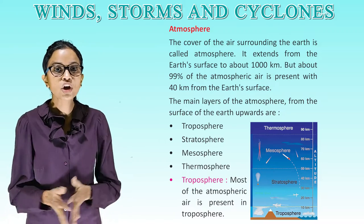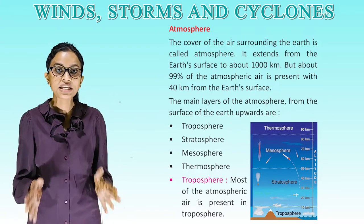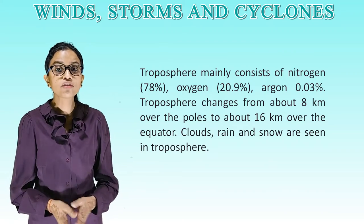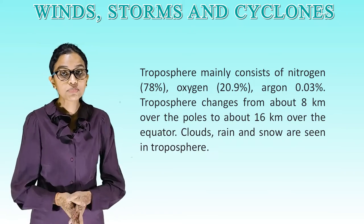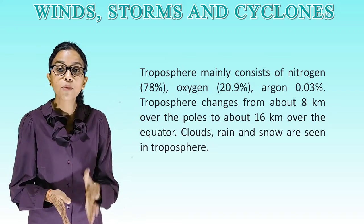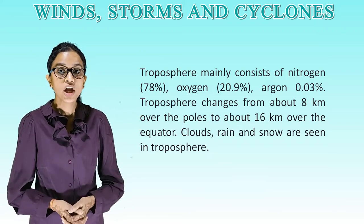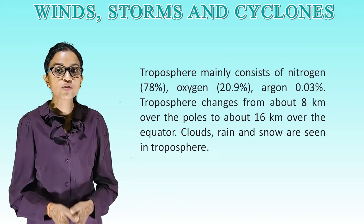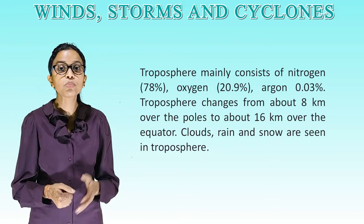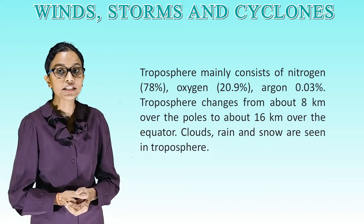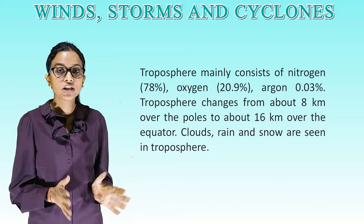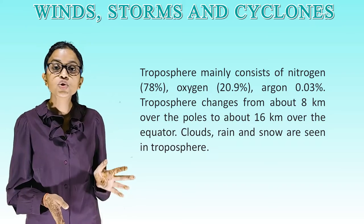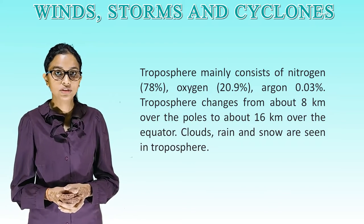Troposphere: Most of the atmospheric air is present in the troposphere. It mainly consists of nitrogen 78%, oxygen 20.9%, and argon 0.03%. The troposphere ranges from about 8 km over the poles to about 16 km over the equator. Clouds, rain and snow are seen in the troposphere.